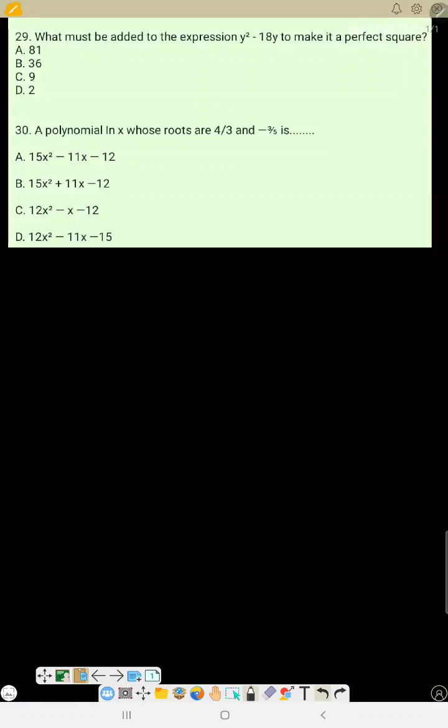Number 29: What must be added to the expression y squared minus 18y to make it a perfect square? To find what must be added to make it a perfect square, pick the middle number minus 18, divide it by 2, and square the result.